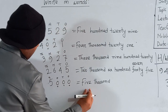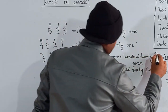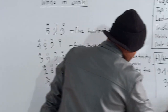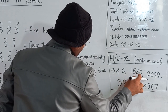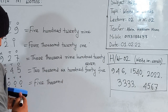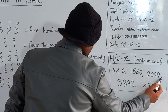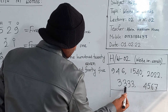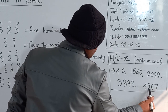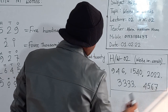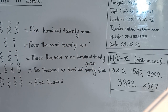Now my dear students, look here — here is your homework. Nine hundred forty six; one thousand five hundred forty; two thousand twenty two; three thousand three hundred thirty three; four thousand five hundred sixty seven. This is your homework. You have to submit your homework next Saturday at your school campus.